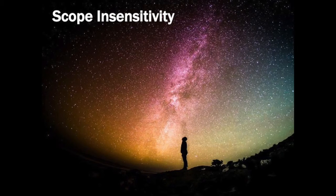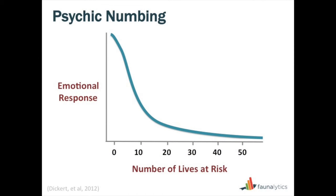Not only does large-number messaging not resonate, but it could actually be counterproductive. This chart, recreated from Stefan Dickert and his team in 2012, shows a phenomenon where the more people you include in your advocacy message, the less emotional response you get. This is disheartening — because this is the greatest social justice issue of modern times, and it's largely driven by these numbers. But we can't use those numbers externally. Instead, we focus on stories of individual animals, and that is largely more effective than talking about large numbers.